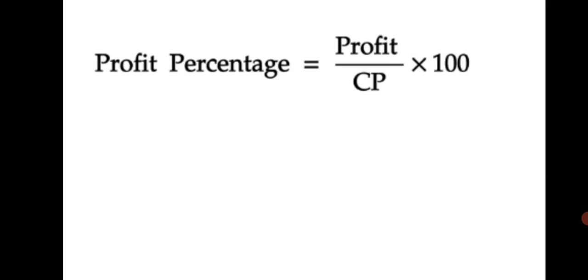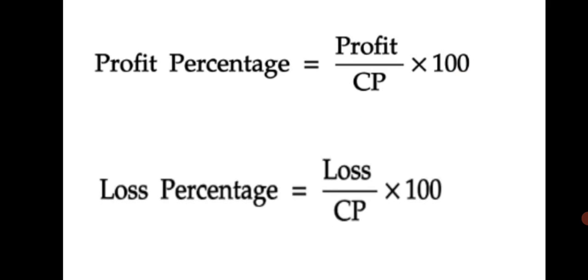So these are the two formulas. Let's have a look once again: Profit% = (Profit / Cost Price) × 100, and Loss% = (Loss / Cost Price) × 100. With the help of these two formulas we are going to solve Practice Set 33. Do write these two formulas in your notebook and learn them well.